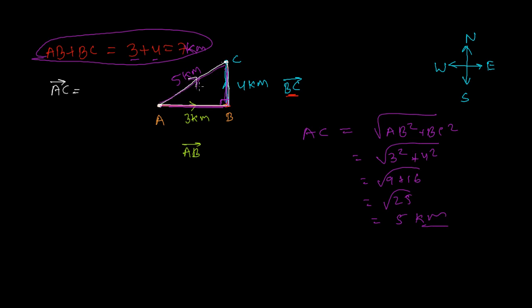So the net displacement vector AC equals five kilometers, not three plus four which is seven kilometers. Algebraically it looks like I covered seven kilometers, but in vector terms I walked only five kilometers, because a vector requires specifying direction too. Displacement is the shortest distance between two points — the line joining the initial and final point — which is five kilometers.